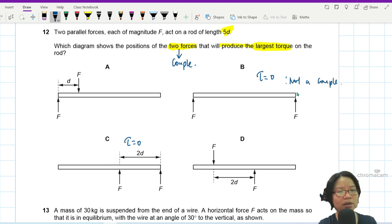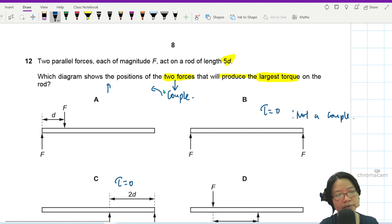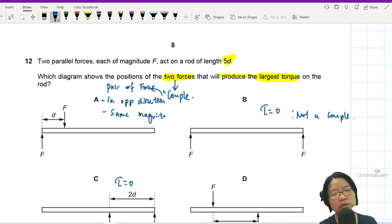What's a couple again? Well, a couple is a pair of forces in opposite direction. Preferably, I think it's the same magnitude, not preferably, they should have the same magnitude. And they cause rotation. That is the definition of a couple.